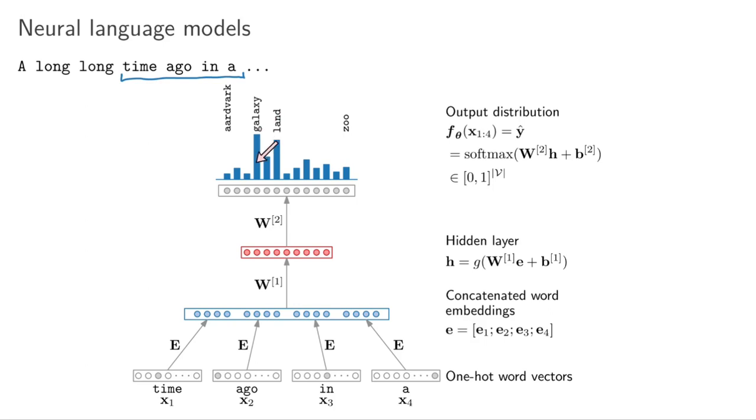The idea then is that if I have a high output here, a value close to one maybe, then that's the word that I predict that would follow. In this case 'time ago in a aardvark' is probably not that likely, zoo is probably not that likely, but galaxy and one are probably likely words. This shape was actually one of the early neural language models that people used.